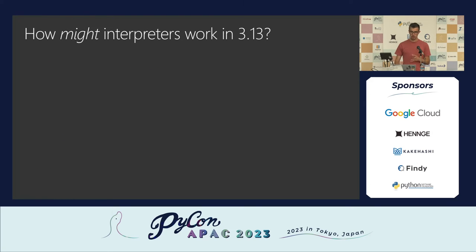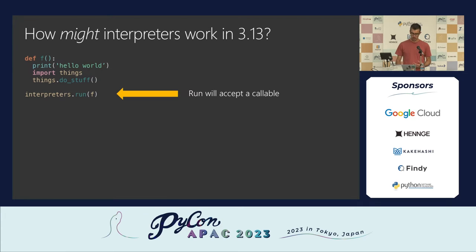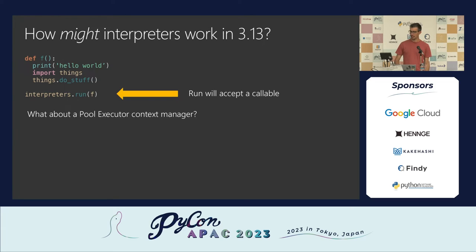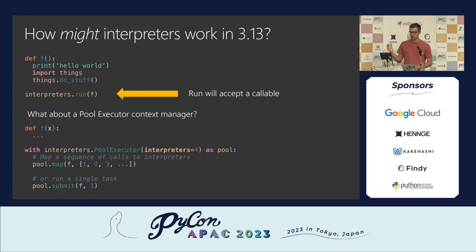The proposal that might be in 3.13 is that you would have a function defined in Python code and ask it to run that function in a subinterpreter — a lot easier than strings. So it should accept a callable, similar to how the threading interface works at the moment. Another thing that should happen in the future, hopefully in 3.13, is an executor context manager. Similar to threading pools, you create a pool, you have a series of work to be done, and a pool manager manages which task to give to which thread. We will see something like an interpreter pool where you have a bunch of work to be done and you can ask that pool to do the work in parallel.